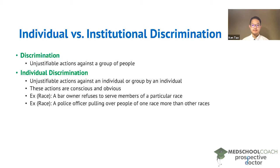When it's an individual person, these actions are conscious and obvious. As an example, you have a bar owner that refuses to serve members of a particular race, or you can have a police officer pulling over people of one race more than other races.